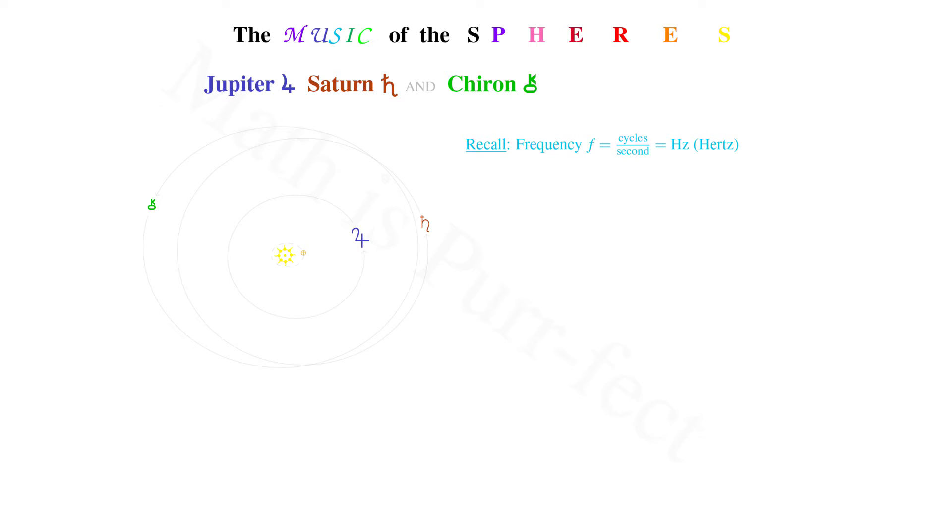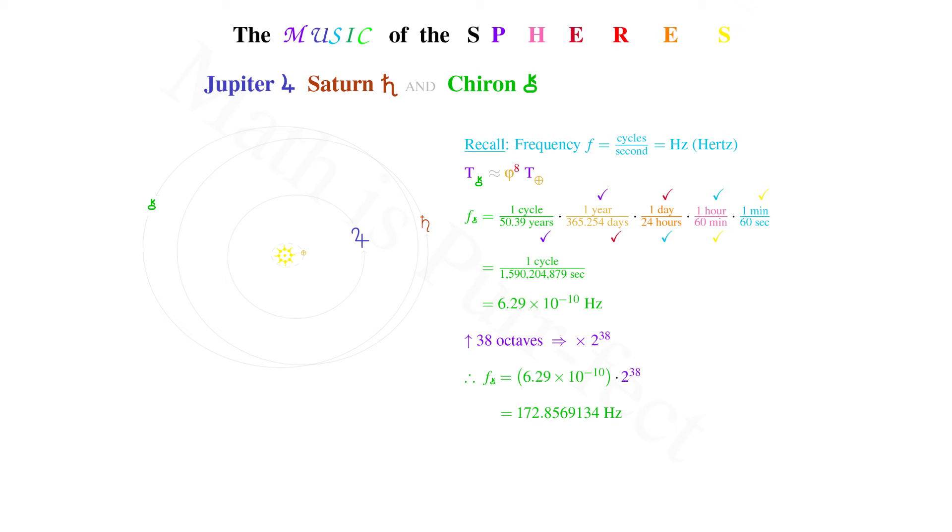The last heavenly object I will consider is Chiron. Chiron is a centaur captured from the Kuiper belt and thrust in between the orbits of both Saturn and Uranus. Although not recognized until my lifetime, it's interesting to note that this eighth planet is related in periodicity to the Earth by a factor of phi to the eighth power. That period is one cycle every 50.39 years. Translating into seconds gives us a frequency for Chiron of 1 cycle every 1,590,204,879 seconds, or 6.29×10⁻¹⁰ Hz. Raising it up 38 octaves by multiplying by 2³⁸ gives us a frequency of 172.86 Hz, approximately an F.